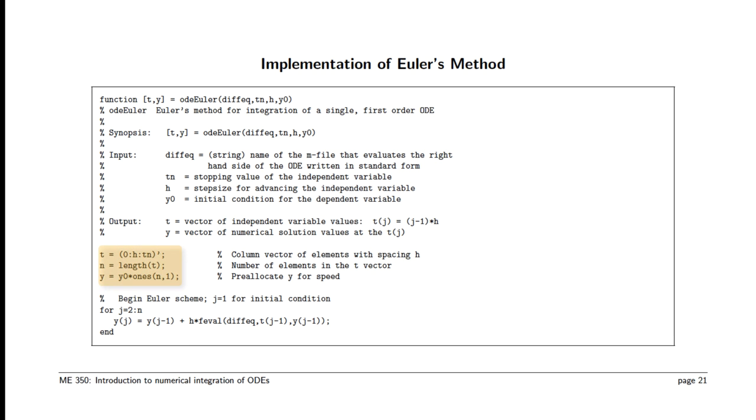So as before, we create the t vector, we create a y vector for efficiency by pre-allocating it, and then we iterate. Notice that the last part of the loop statement is h times feval of diffeq. That indirect function evaluation, feval, allows diffeq to be a variable, so we can pass in either the name of a function or a handle to the function. That's it. That's all there is to it.